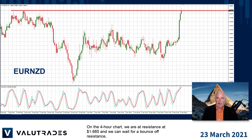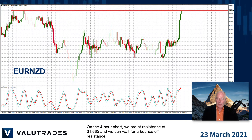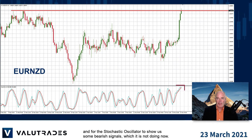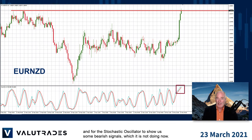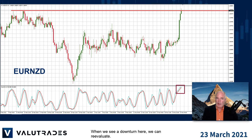On the 4-hour chart we are at resistance at $1.685, and we can wait for a bounce off resistance and for the stochastic oscillator to show us some bearish signals, which it is not doing now. When we see a downturn here we can reevaluate.